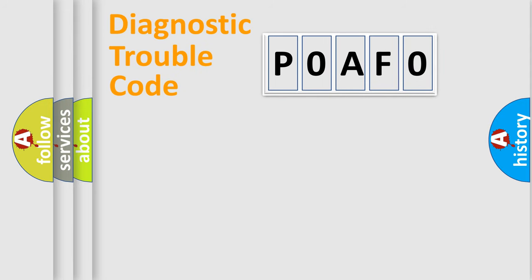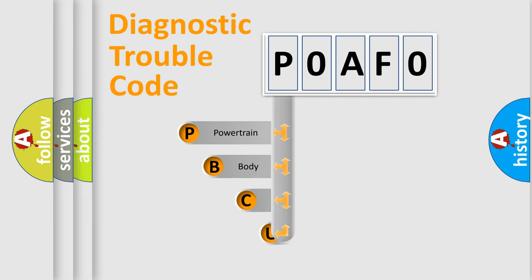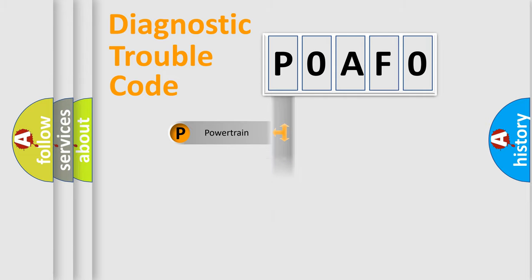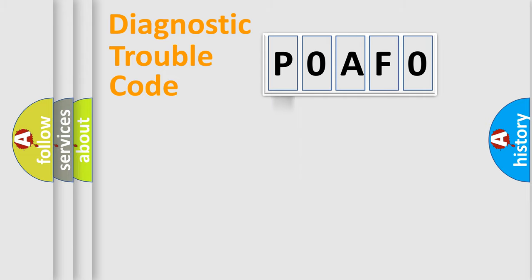Let's do this. First, let's look at the history of diagnostic fault code composition according to the OBD-II protocol, which is unified for all automakers since 2000. We divide the electric system of the automobile into four basic units: Powertrain, Body, Chassis, and Network.